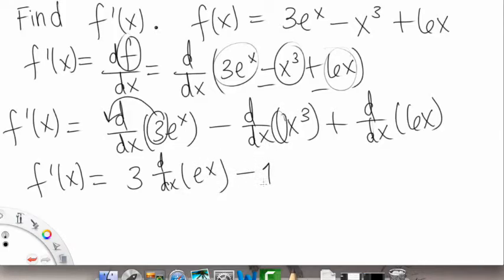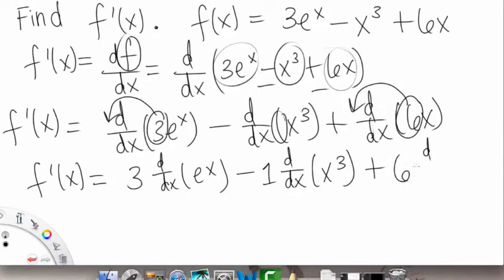and then there is no coefficient here, so that's just a 1. We'll just leave that as it is, okay? x to the third, and then plus this, this 6 can move out, okay? So that's a 6 times d dx of x.